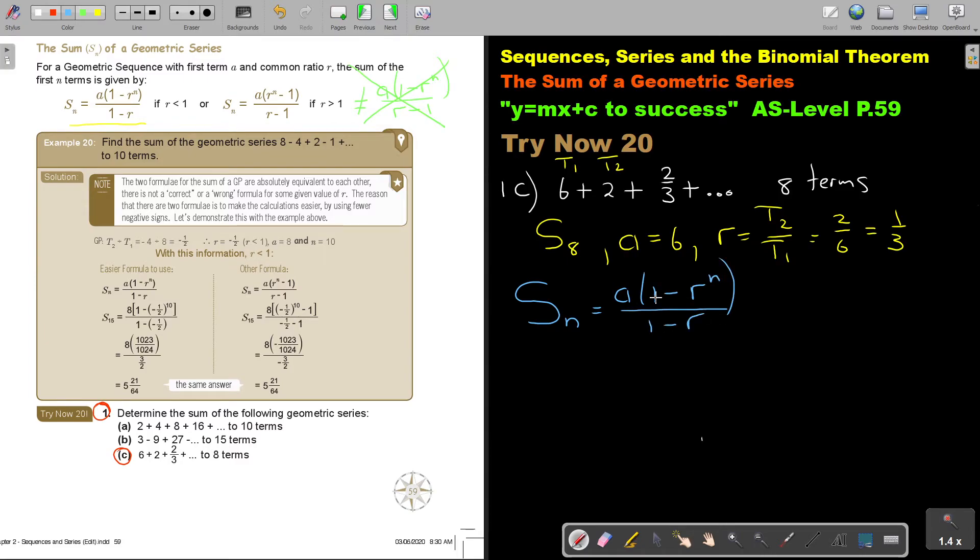Just remember, if you used 1 in front, you must also use 1 there. So, if I'm going to look at this, I'm just going to say S8. And in the place of A, I put 6. In the place of R, it's a third. In the place of N, 8. And it's 1 minus a third.